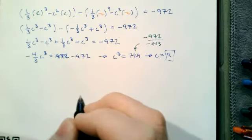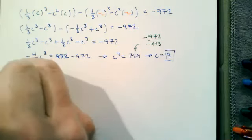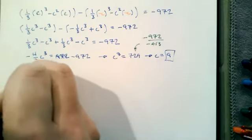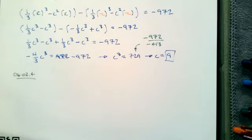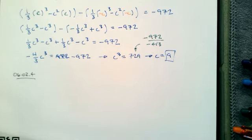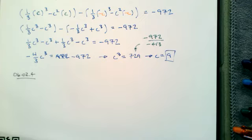We have a similar question in problem 6.2.4. Different function. We want to consider the area between the curve y equals e to the x minus 10 and the x-axis, between 0 and c for c greater than 0. Find the value of c that makes the area above the axis equal to the area below the x-axis.